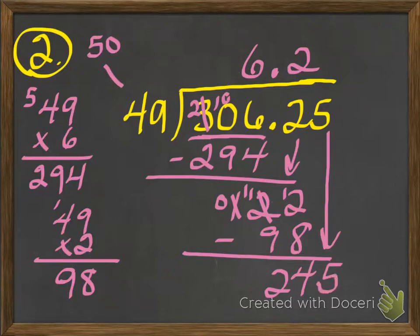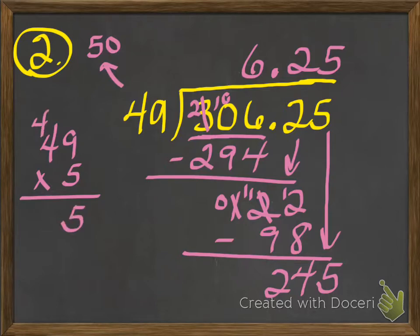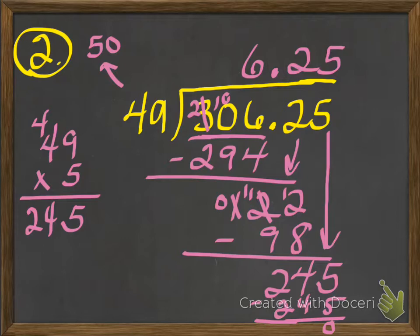98 goes down here, I subtract. I'm going to have to borrow — 12 minus 8 is 4, borrow again, 11 minus 9 is 2. Bring down the next digit — so now I have 245 divided by 49. Remembering that 49 is close to 50, let's say 5 times. So I've got 49 times 5: 5 times 9 is 45, carry the 4, 5 times 4 is 20, plus 4 is 24 — that gives 245, the same number. Alright, I got to 0, so I'm done, and there's my answer. To check it, I could multiply it back up.